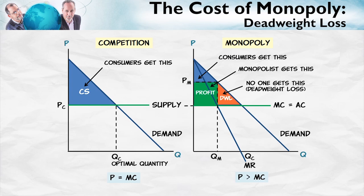These are trades that from a social point of view are beneficial. The demanders are willing to pay more than what would be the cost of producing these goods. These trades, however, don't happen. Even though they're socially beneficial, they don't happen because they aren't profitable — they aren't privately beneficial.